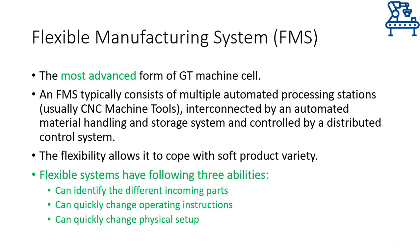To manufacture a variety of parts, an FMS is capable of identifying the incoming raw material or parts and, depending on this input, change its operational instructions and/or sequence. This change is possible because of the ability of an FMS to change its physical setup if the need arises.